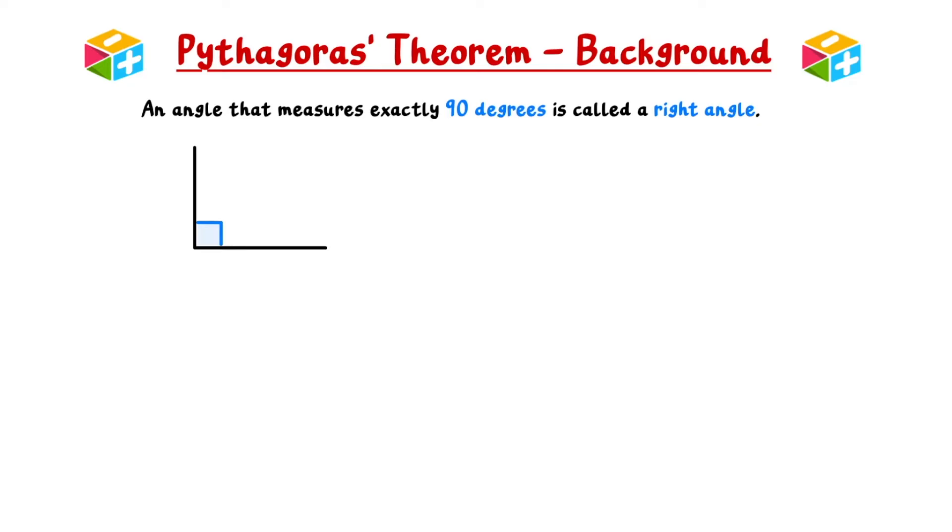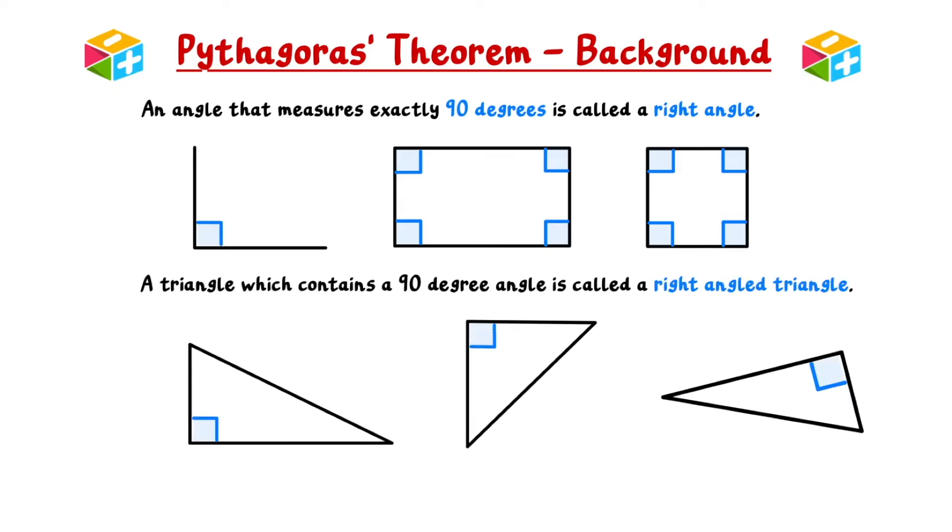Right angles are a key component in various geometric shapes, including rectangles and squares. Building on this definition, a triangle which contains a 90 degree angle is called a right angle triangle.